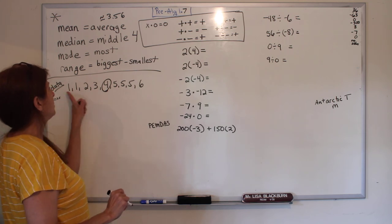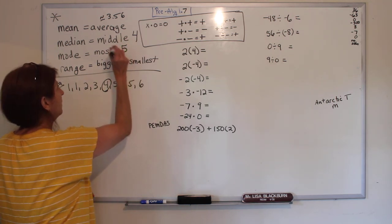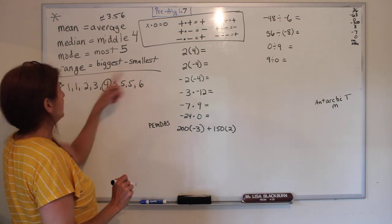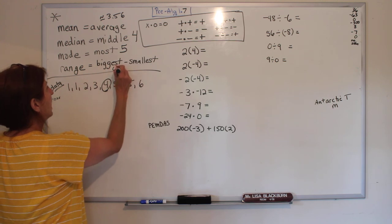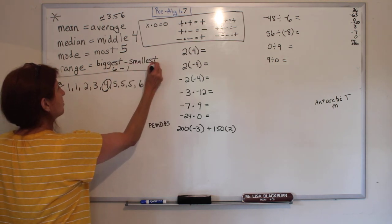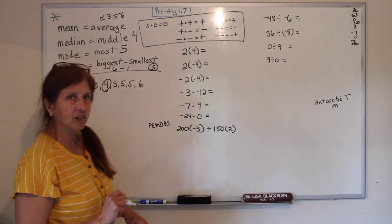Which one is the most? Five, there's three of them. And the range, biggest to smallest, would be 6 minus 1, so this is also 5, or you could say the range is 1 to 6.